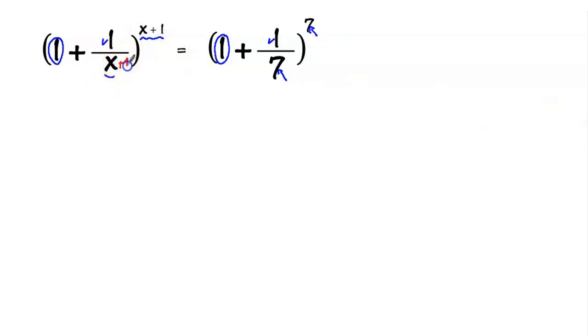Note that if we have x plus 1 here, this equation can be solved easily. We can just say that x plus 1 is equal to 7, same here. So if x plus 1 is equal to 7, in this case x equals 7 minus 1, 6. But unfortunately, this is not the case.